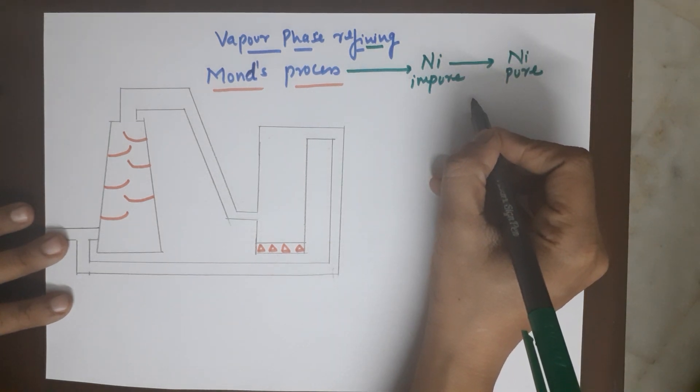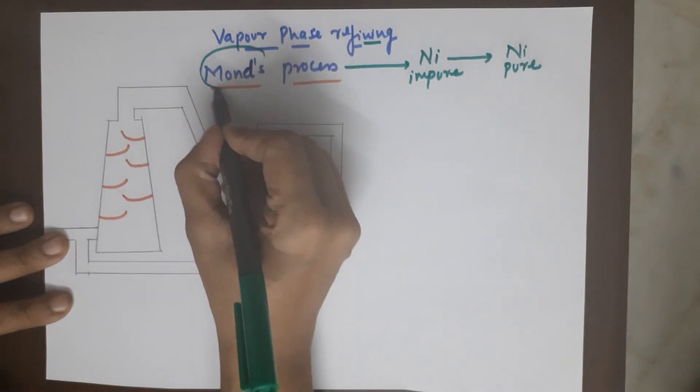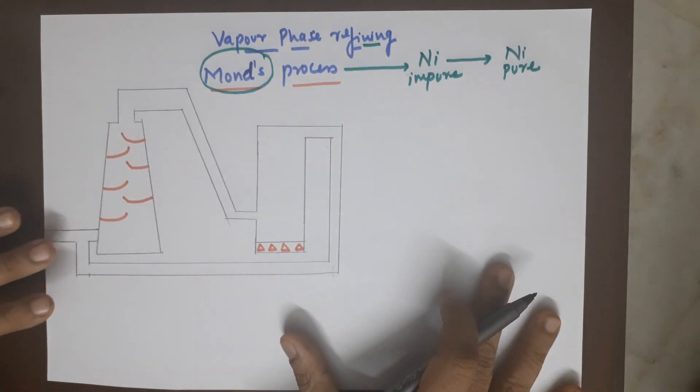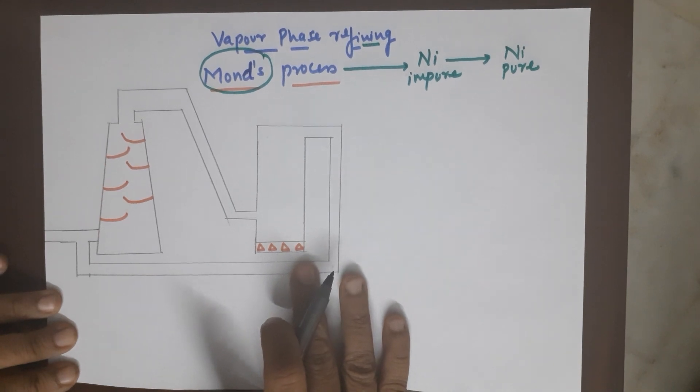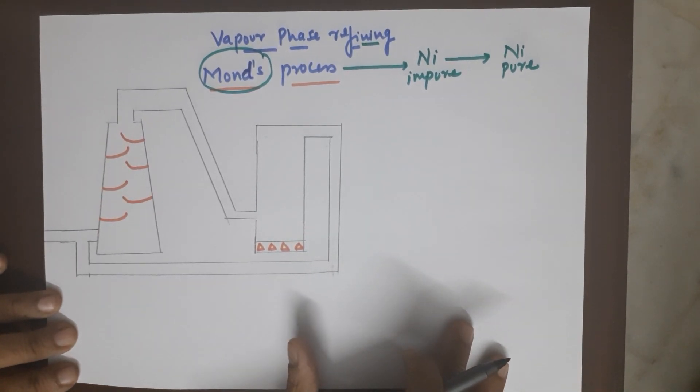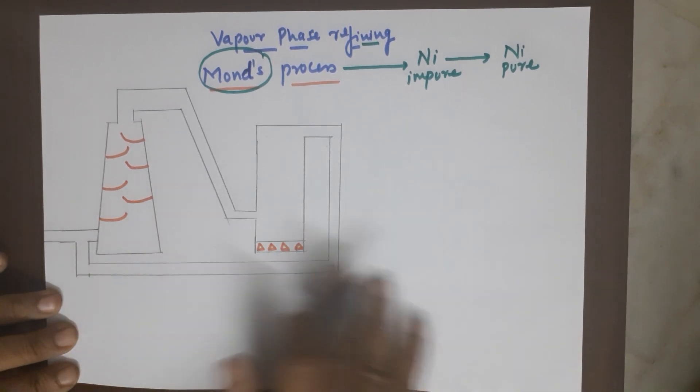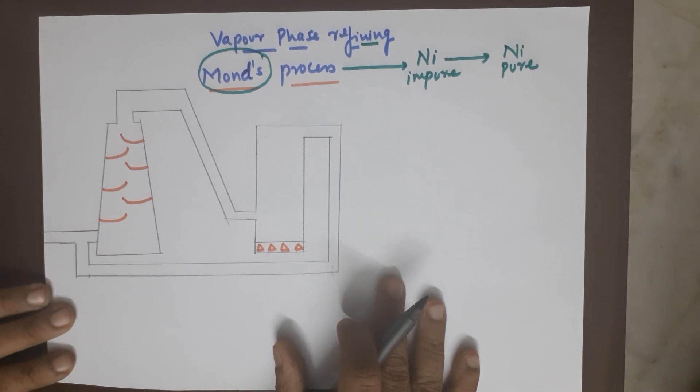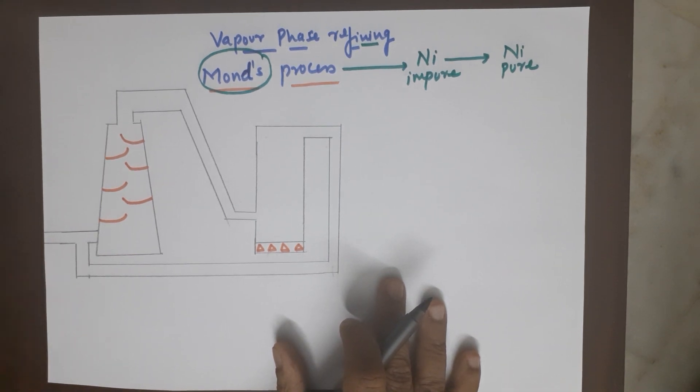So the process that is used is known as the Mond process and the agenda of the process is in this assembly as I have mentioned. It is just a flowchart to understand the concept. You do not need the diagrams for class 12th and neither do you have it in your course, but still for better understanding I have tried to give you an illustration which will help you remember the topic.